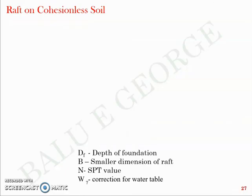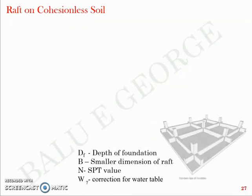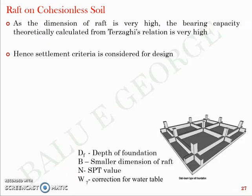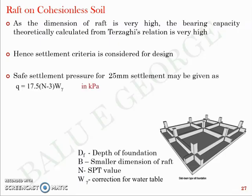In the case of cohesionless or sandy soil, when the dimension of the raft is very large, the bearing capacity obtained from Terzaghi's equation or other theoretical equations could be very large, which may not be logical in all cases. So for raft on cohesionless soil, you resort to settlement criteria for design, because working out capacity from bearing capacity theory gives a very large value. To be on the safe side, you assume a 25 mm settlement criterion.